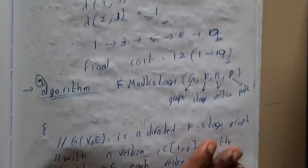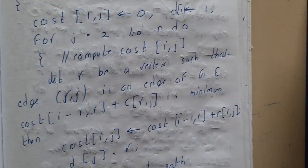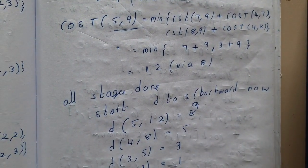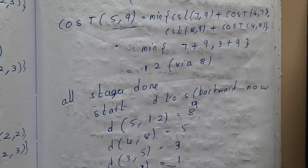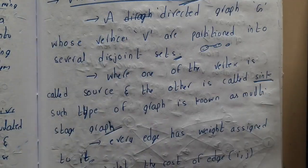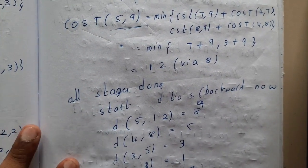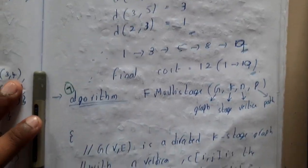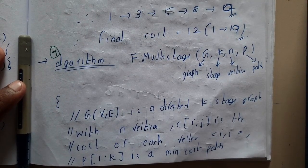I hope everyone got a clear idea on both the backward and forward approaches of the multi-stage graph problem. In the next lecture we will go through the algorithm — it will essentially be coding the steps we just performed. Please be perfect with these two problems as you can expect one question from this chapter in the examination. Thank you for watching, see you in the next tutorial.